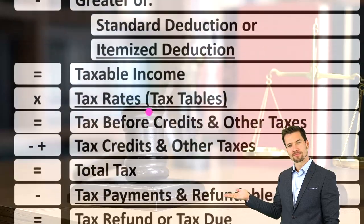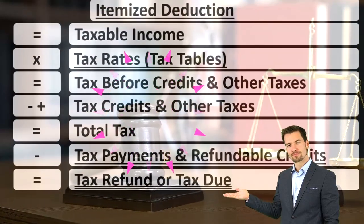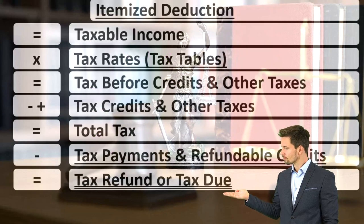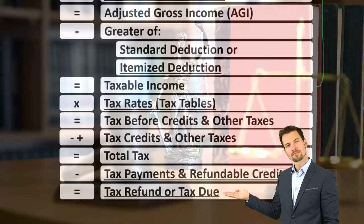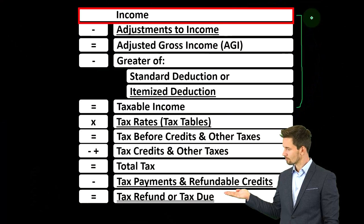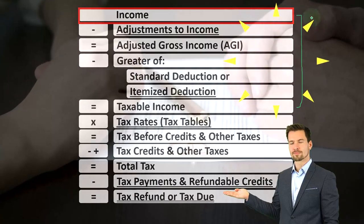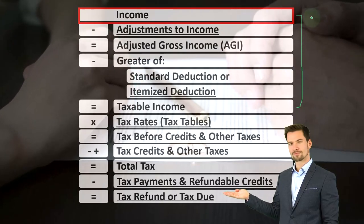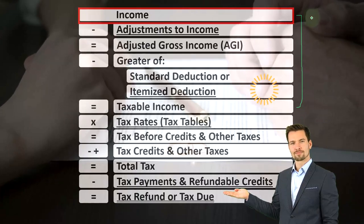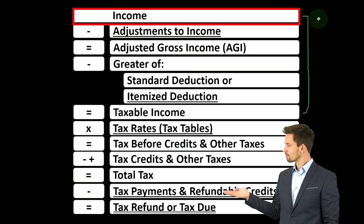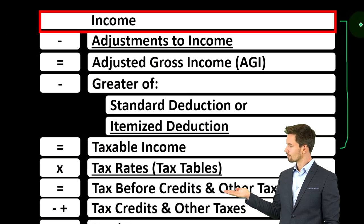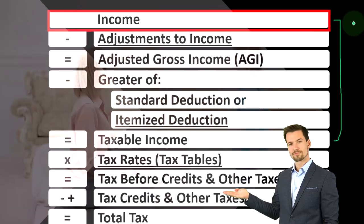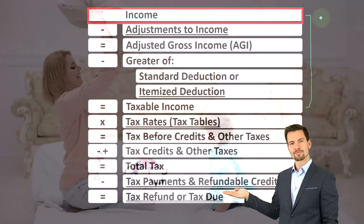Alimony is one of those kind of weird situations. There's been a change to the tax law fairly recently, so you want to make sure you keep that in mind because there's kind of a cutoff date situation. When we're thinking about alimony, we're thinking about a situation where there is a separation — a married couple typically separating, a divorce taking place — and then possibly one spouse paying the other. Typically in that scenario, we have two categories of payments: one being child support, the other being alimony.